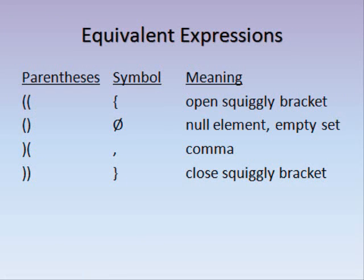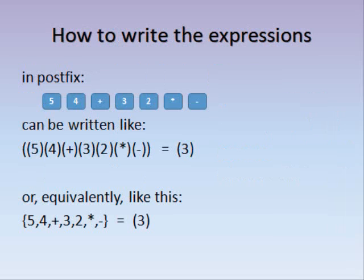Equivalent expressions. 'Open, open' is an open squiggly bracket. 'Open, close' is a null element or empty set. 'Close, open' is a comma. 'Close, close' is a close squiggly bracket. In postfix form, '5, 4, plus, 3, 2, times, minus' can be written one way, or equivalently, another way.